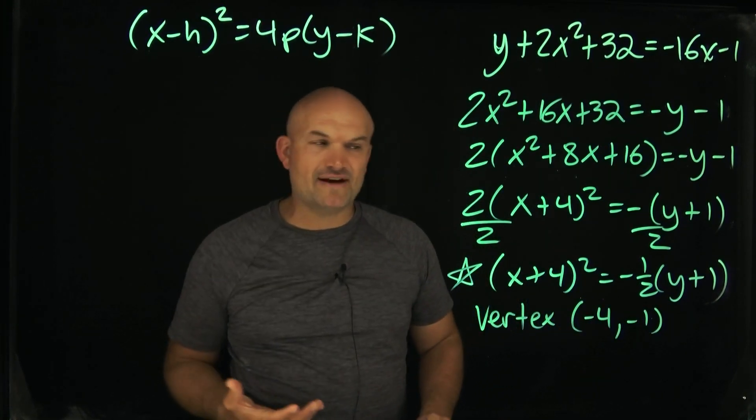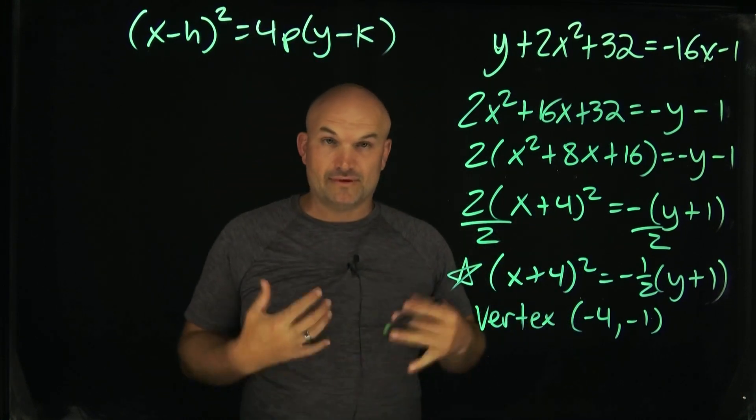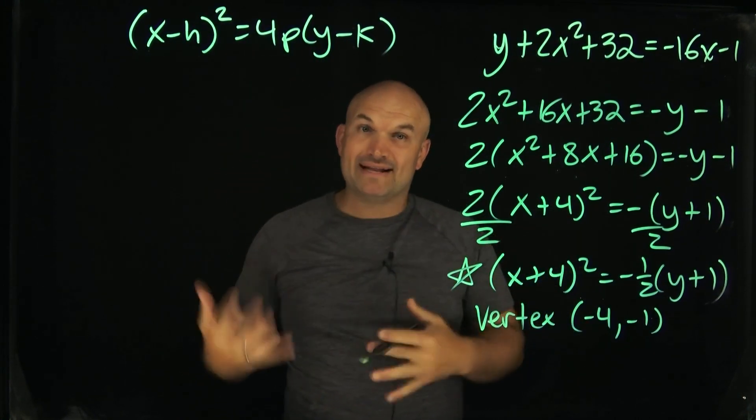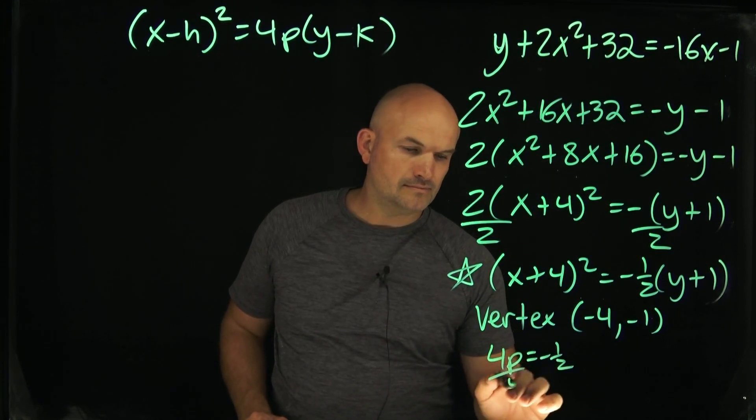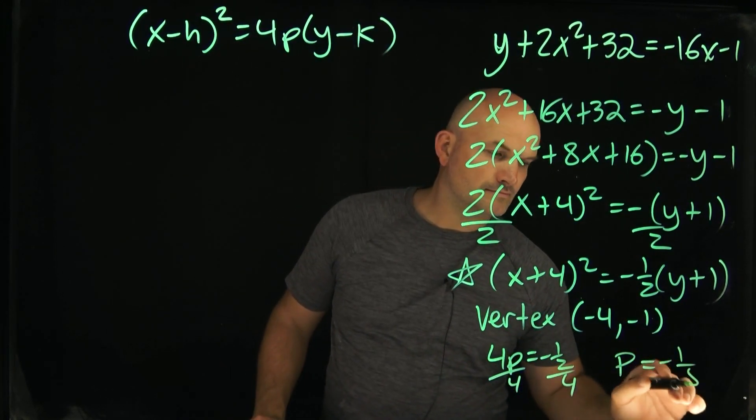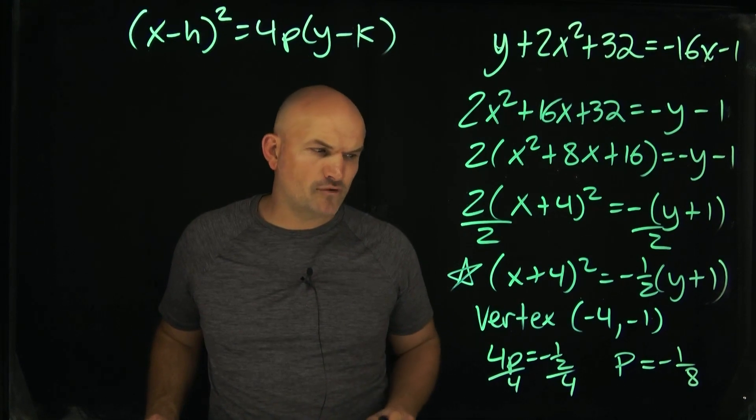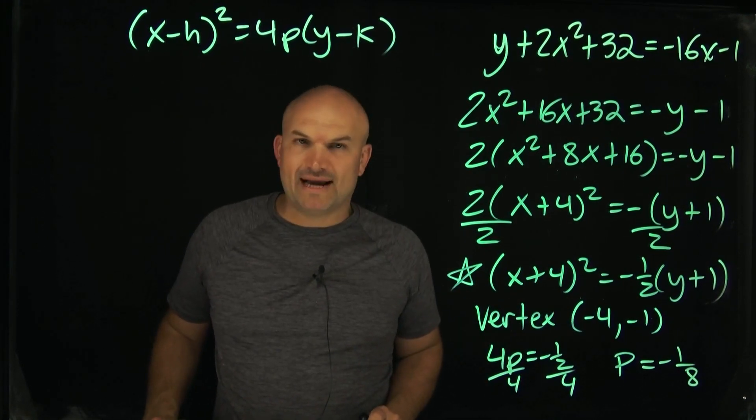Now, as far as identifying the P, remember, we have 4p is equal to a negative one half. So what I'm going to do is I'm going to set that, write that equation and then I'm just going to go ahead and solve for P. Okay, I have a vertex negative four, negative one, and I have my P is going to be negative one eighth.